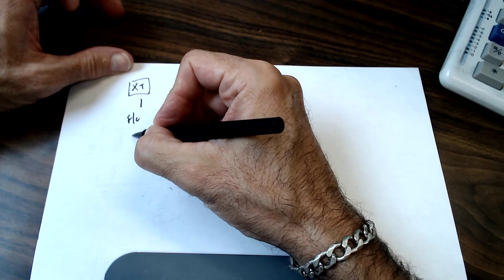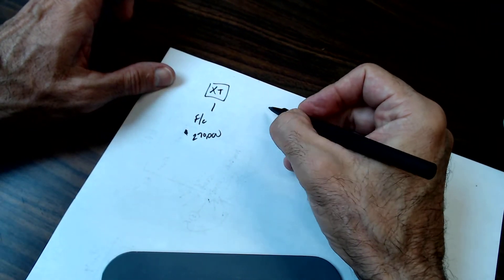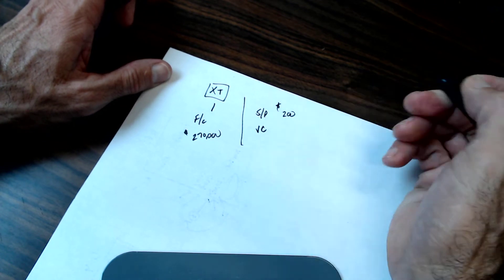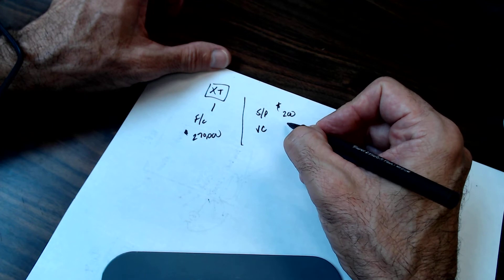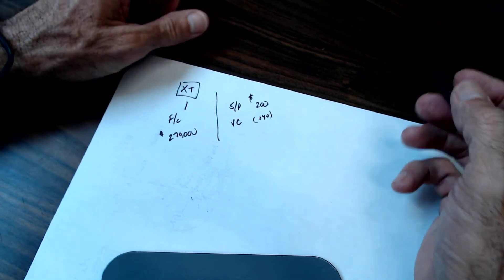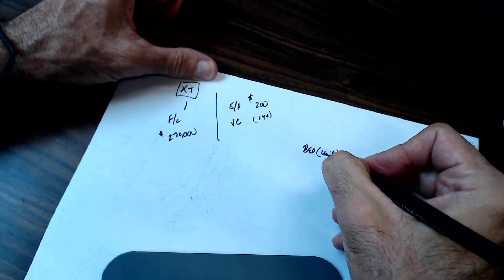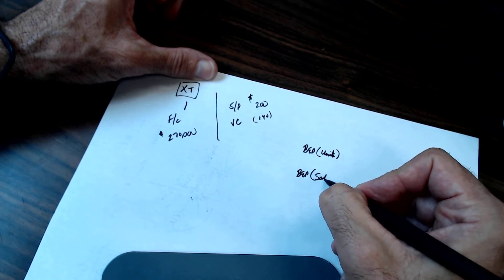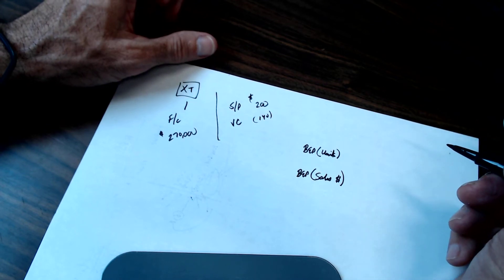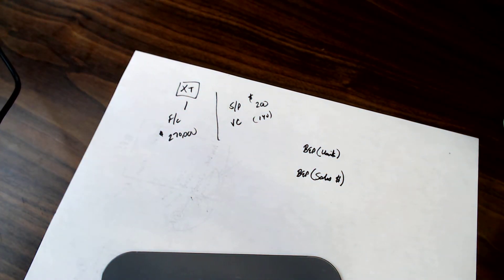Fixed costs are $270,000. For the per-unit figures, we have a selling price and a variable cost: we sell them for $200 a roll and the variable cost is $140. They want to know the break-even point in units — how many rolls do we need to sell — and the break-even point in sales dollars. Same point, just expressed two ways. So how do we compute that?